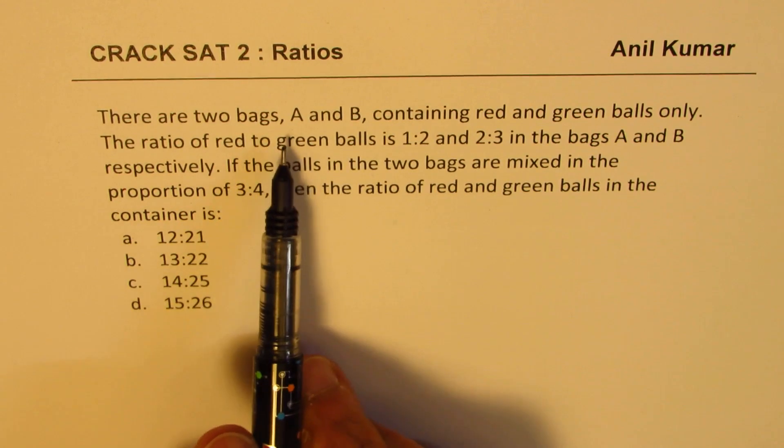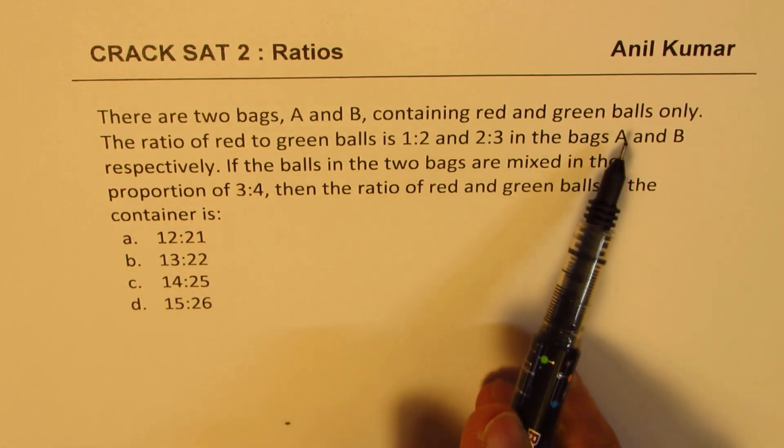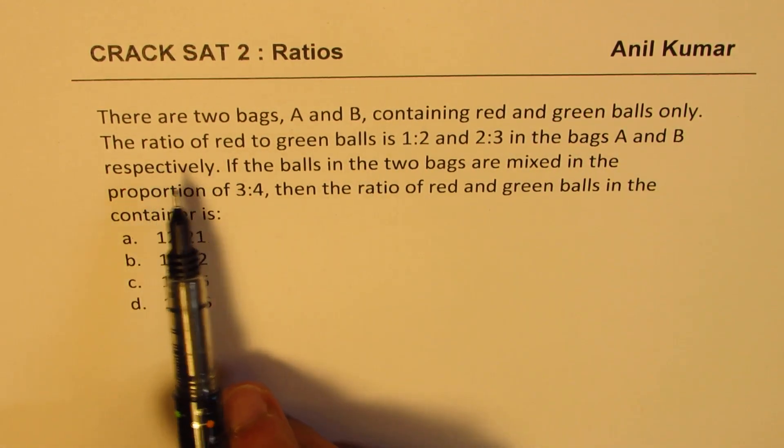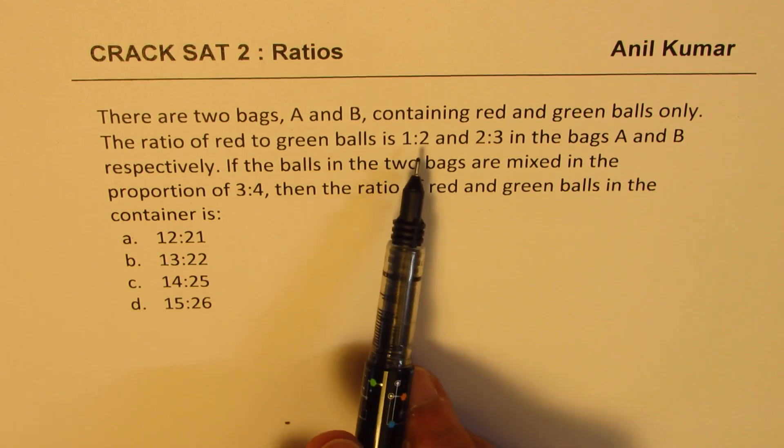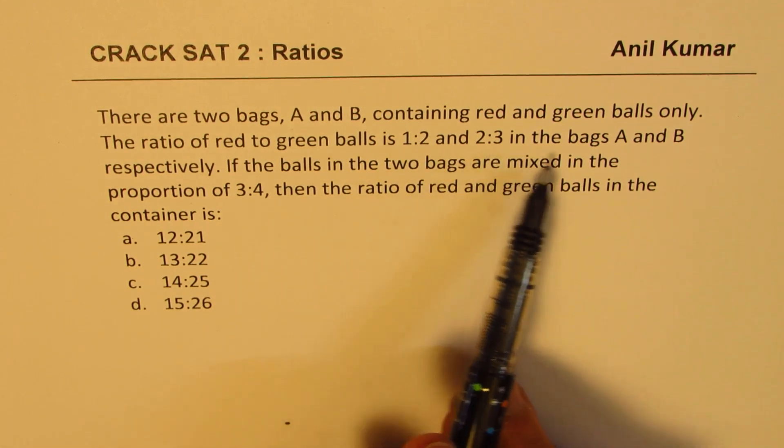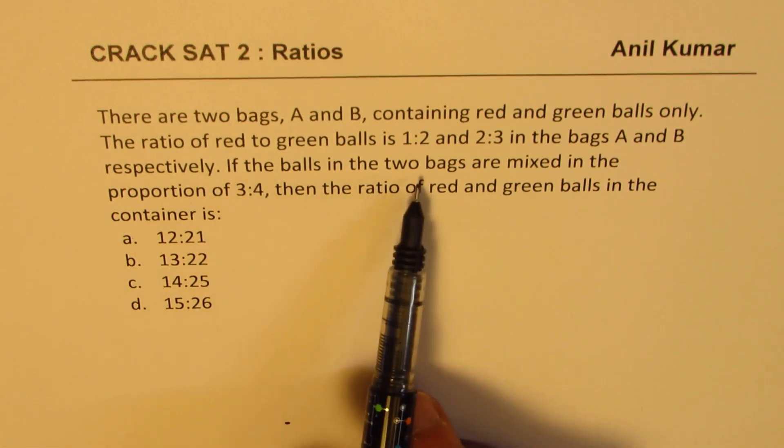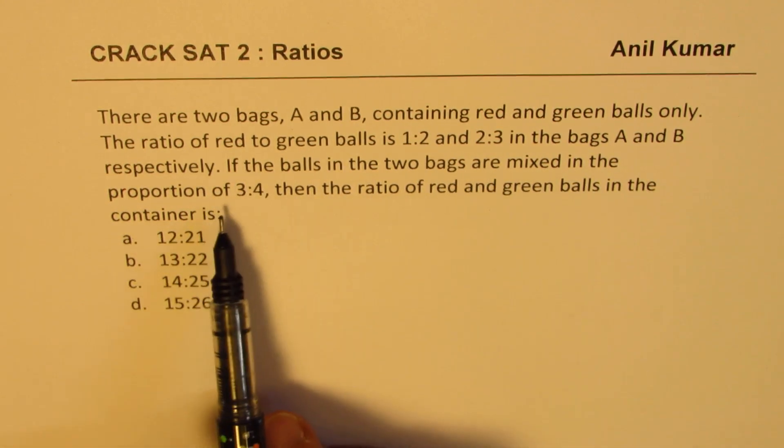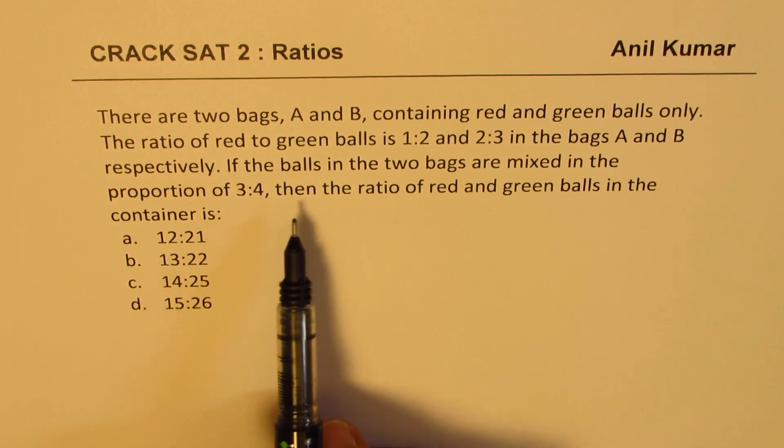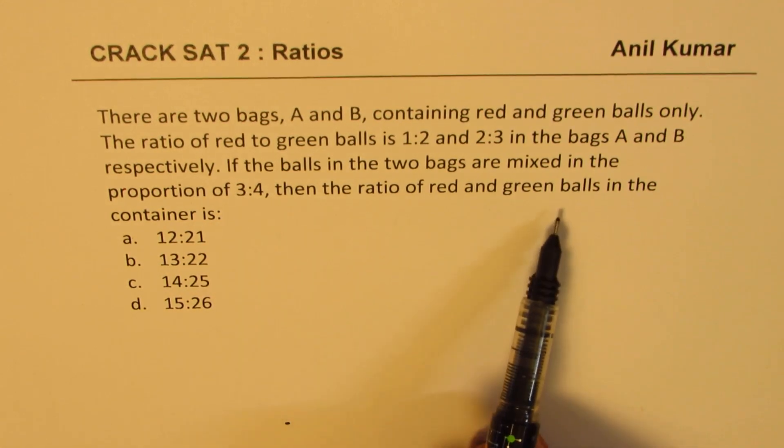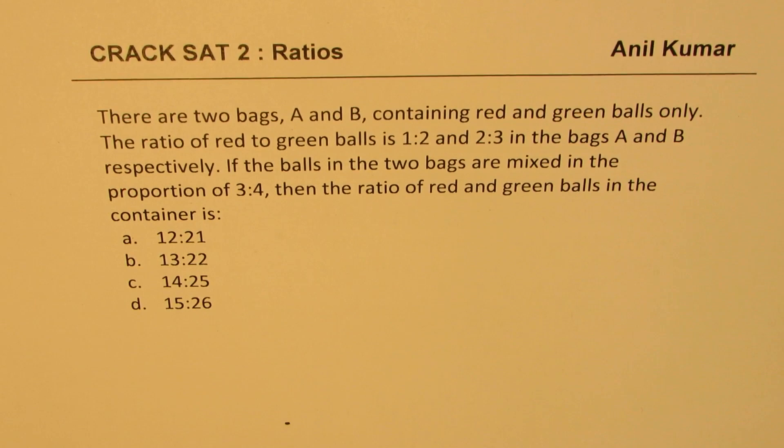There are two bags A and B containing red and green balls only. The ratio of red to green balls is 1 to 2 and 2 to 3 in the bags A and B respectively. If the balls in the two bags are mixed in the proportion of 3 to 4, then the ratio of red and green balls in the container is what?